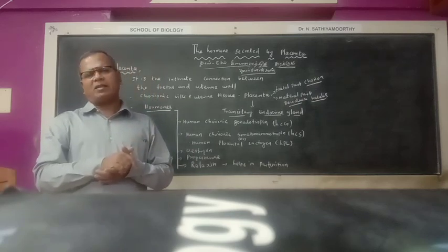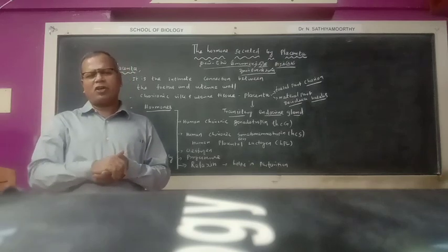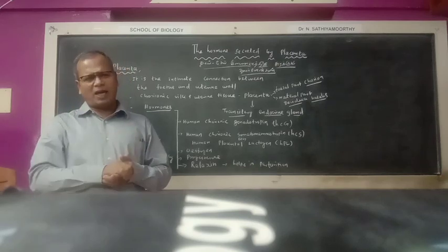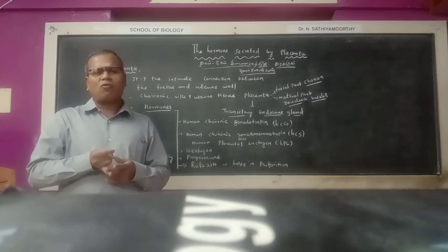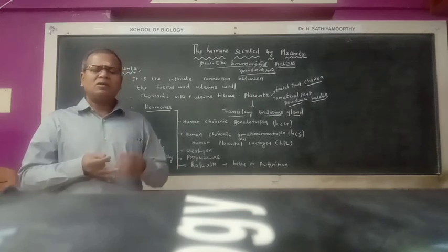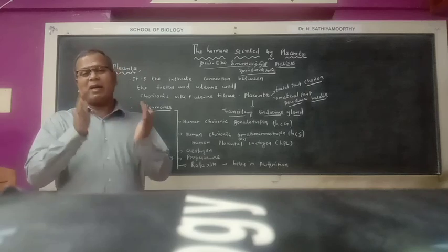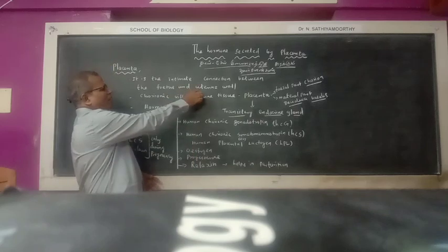The endometrium is the uterine wall's innermost layer. The other layers are muscular, epimetrium, myometrium, and endometrium. The endometrium is a very important part of the uterine wall.